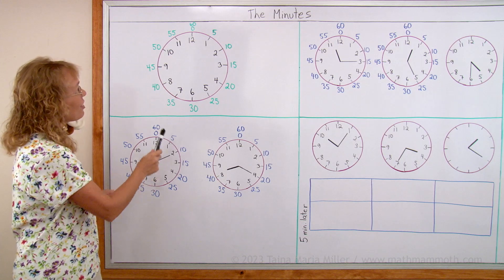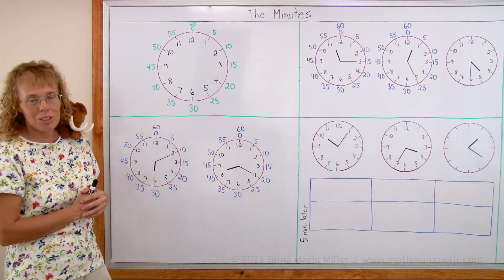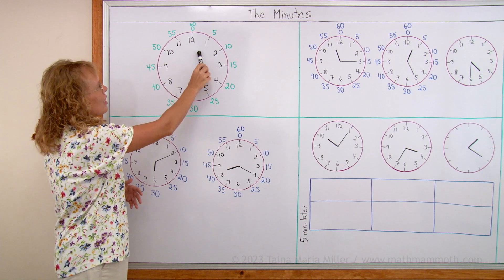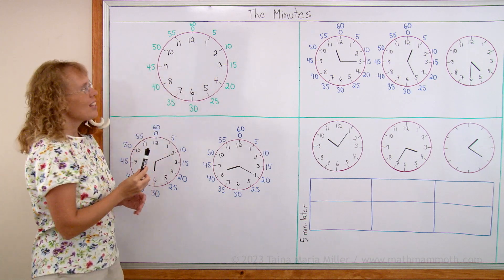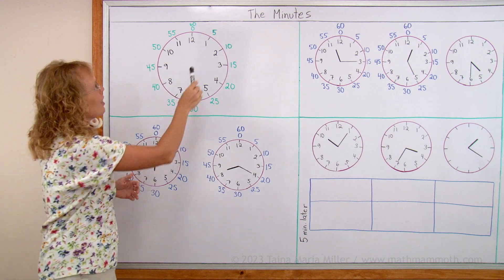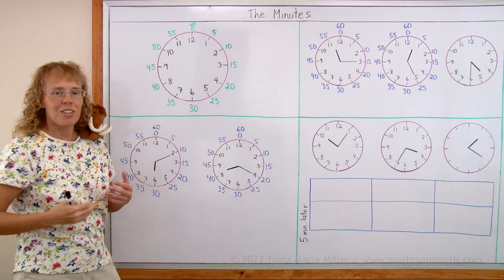In this lesson we're going to study the minutes and how the hours and minutes work on the clock. I have here a very special clock as you can see because it has lots of numbers. It has the normal set of numbers for the hour hand from 1 to 12.